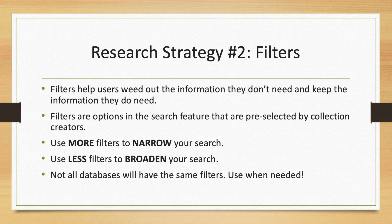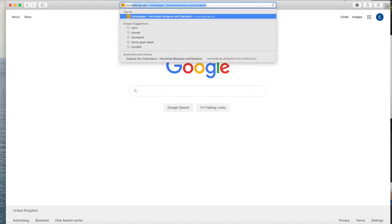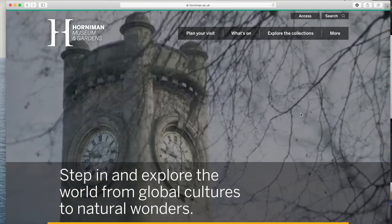The more filters you use, the more narrow your search results will be, and the less filters you use, the broader your search results will be. It all depends on what you're looking for. For this exercise, I will review the filters used in the Horniman's Explore the Collections page. Let me share my screen for an example search. In your internet browser, type in horniman.ac.uk. On the top right, click on Explore the Collections.